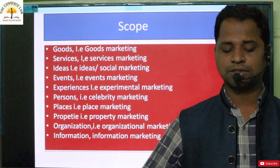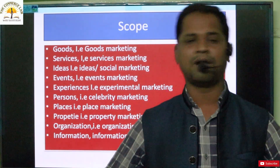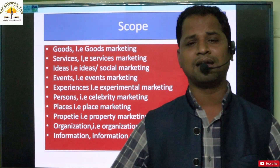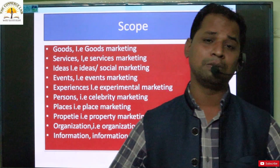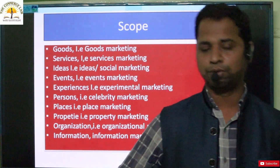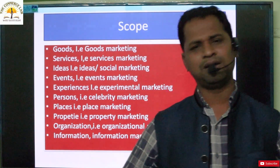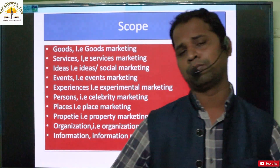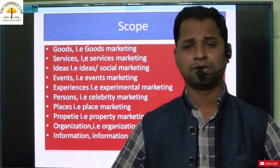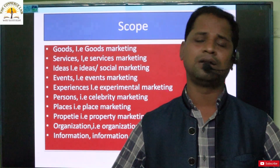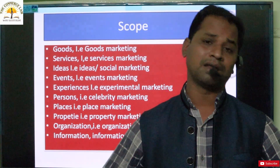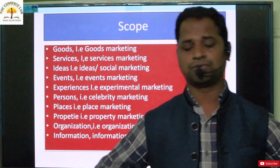Now, what is the scope of marketing? First is goods marketing. Goods are tangible — they can be touched and taken home. It may be a TV, a laptop, a mobile phone, or any kind of product. You can take it home — that is goods. The marketing of these tangible products is known as goods marketing.